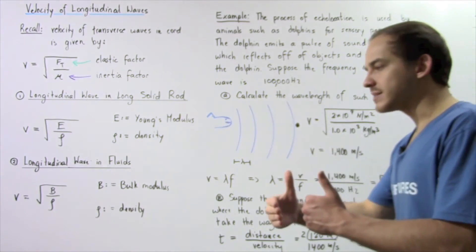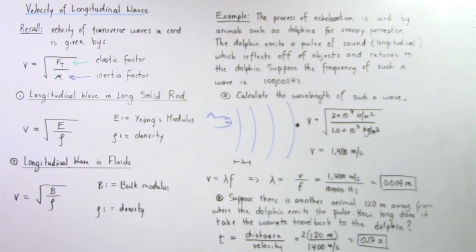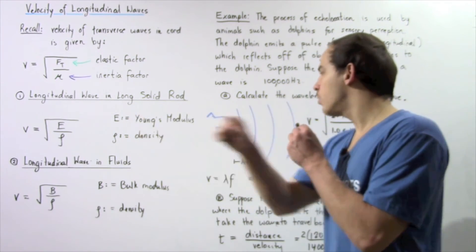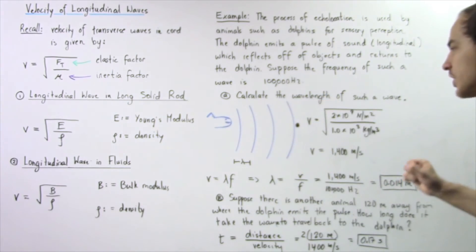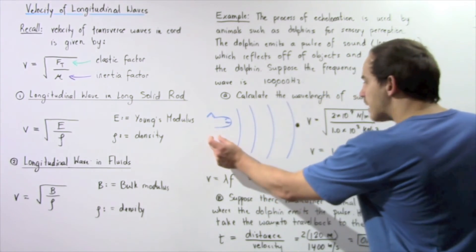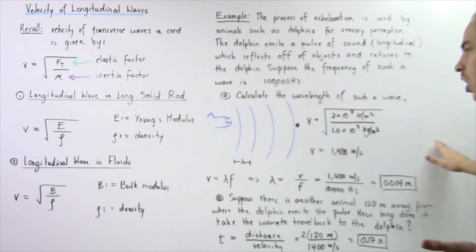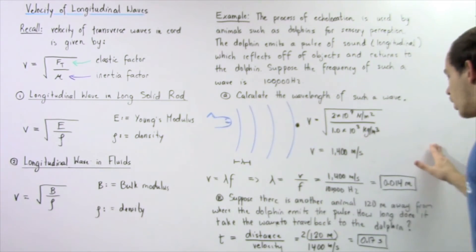The distance from one crest to the next is 0.014 meters. Now let's examine part b. Suppose there is another animal 120 meters away from where the dolphin initially emits the pulse. How long does it take the wave to travel to that animal and back to our dolphin? We assume both are stationary. The pulse travels to the other animal 120 meters away, reflects, and travels back.